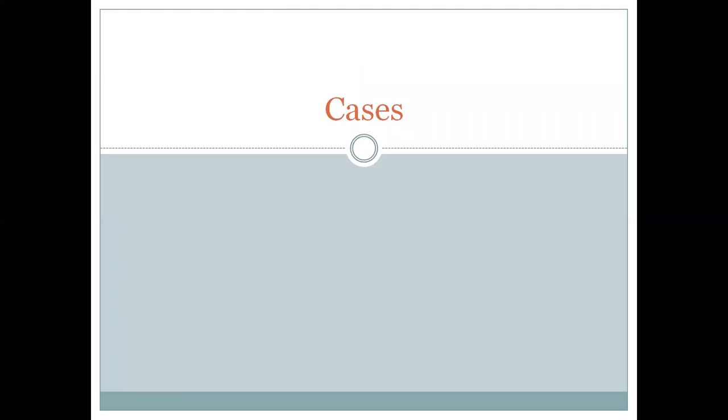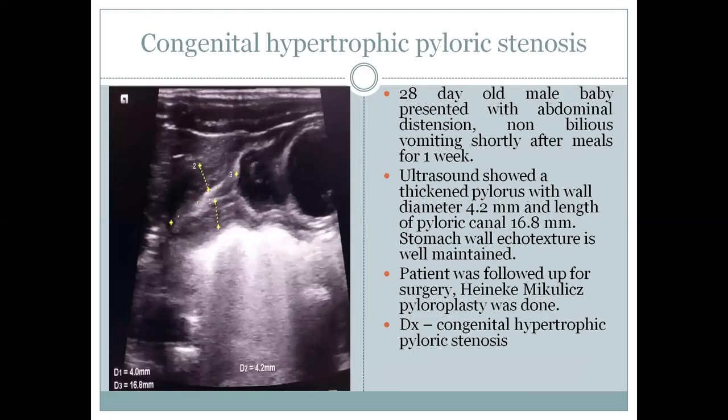Now coming to the cases: the first case presented with a thickened pylorus of 4.2 mm diameter and the pyloric canal measured 16 mm. The patient was taken up for highly selective pyloroplasty and the diagnosis was of congenital hypertrophic pyloric stenosis. This is a very classic case.